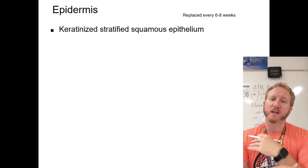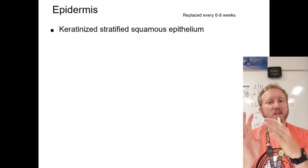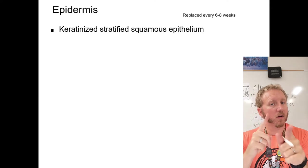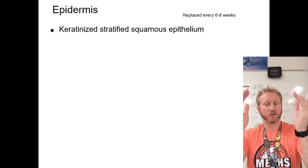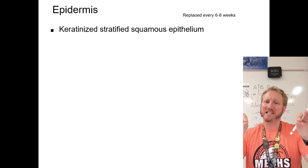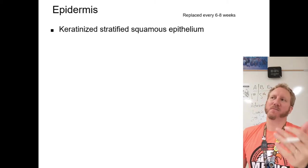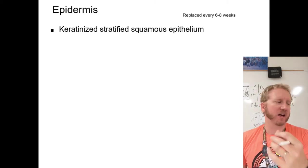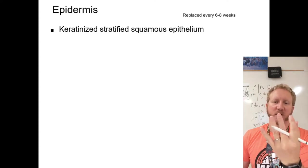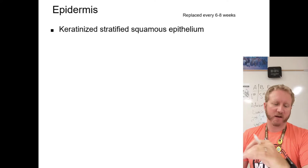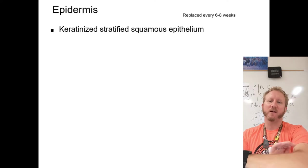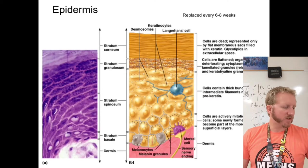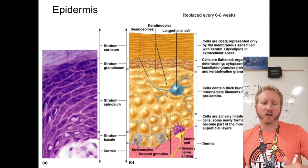Let's break that down: epithelium is the tissue type; stratified means multiple layers; squamous means the cells are flattened; and keratinized means they are full of keratin — a very strong, tough protein that makes up fingernails, hair, and the outermost skin cells, making them waterproof and very strong.